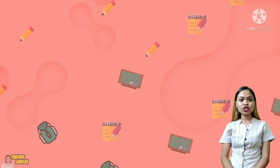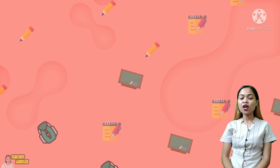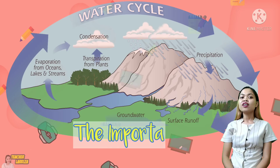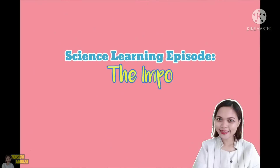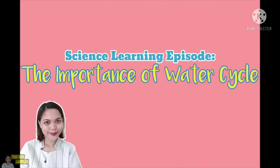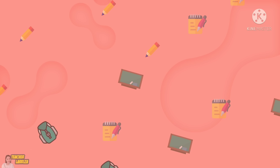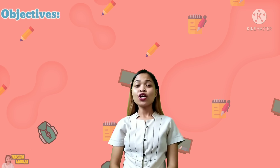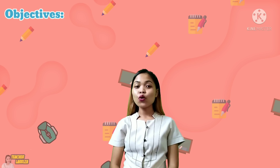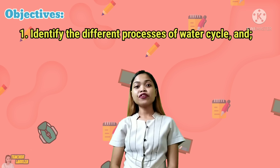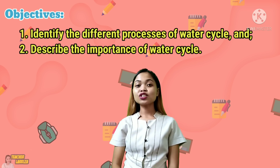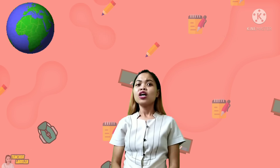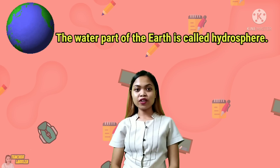Now that you know the uses of water from different sources, we can now move forward to our next science lesson, which is entitled The Importance of Water Cycle. At the end of this video lesson, you are expected to: one, identify the different processes of water cycle; and two, describe the importance of water cycle.